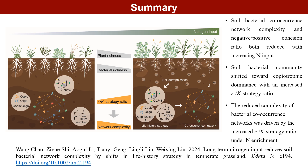Finally, the following summary is made. We found that soil bacterial co-occurrence network complexity and negative-to-positive cohesion ratio both reduced with increasing nitrogen input. Soil bacterial community shifted toward copiotrophic dominance with an increased r/k-strategy ratio. The reduced complexity of the bacterial co-occurrence network was driven by the increased r/k-strategy ratio under nitrogen enrichment. To the best of our knowledge, this study is the first empirical report that reduced bacterial complexity is predominantly ascribed to changes in bacterial life history strategy traits under N-enrichment in grassland ecosystems. This finding provides insights into a more comprehensive understanding of the underlying mechanisms by which microbial traits modulate co-occurrence networks and interactions in response to environmental changes.